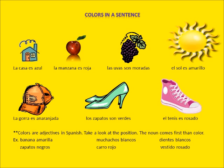Colors are adjectives in Spanish. Take a look at the position of the color — it comes after the noun. The noun comes first, then the color. Examples: banana amarilla, muchachos blancos, dientes blancos, zapatos negros, carro rojo, vestido rosado.